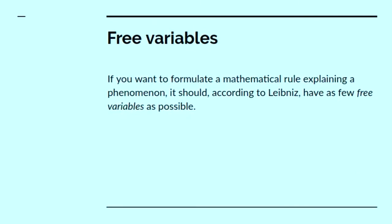Now where do these come from? As I said, he just makes them up. But in general, if you want to formulate a mathematical rule explaining a phenomena, a rule that you want to say is a law that governs that phenomena, according to the mathematician and philosopher Leibniz, it should have as few free variables as possible.